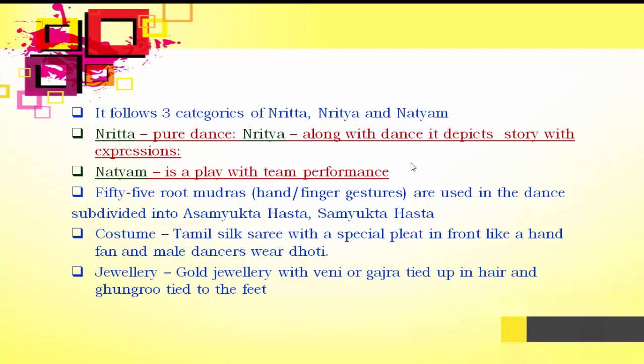These three categories are very important and most Indian classical dances follow them. Nritha is pure dance — the whole performance depicts the pure form of dance. Nrithya, along with the pure form of dance, depicts a story with expressions. Natyam is a play with team performance. All three categories represent different aspects of a particular dance. Bharatnatyam has 55 root mudras — both hand and finger gestures — further subdivided into Asamyukta hasta and Samyukta hasta.